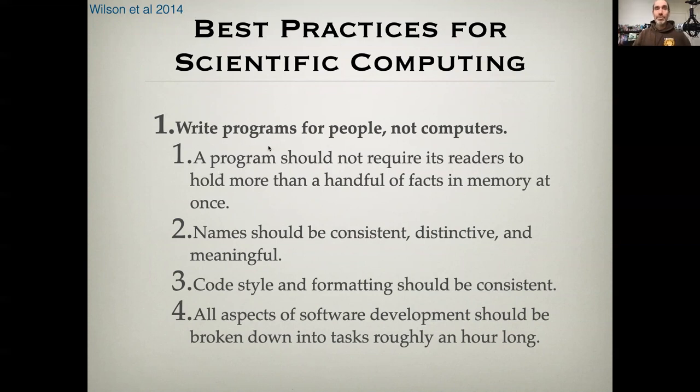First, reinforcing what I said earlier, we write programs for people, not for computers. Things should be human readable. I like this first point that you should not require readers to hold more than a handful of facts in memory at once. You should be able to read through it and not have to remember high-level structure and definitely not have to remember what variable names mean or why you're doing things. It should be clear.